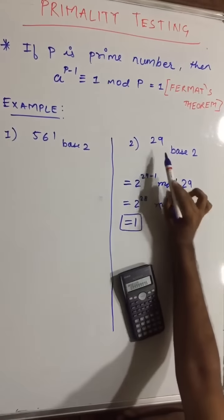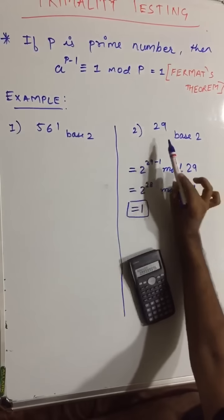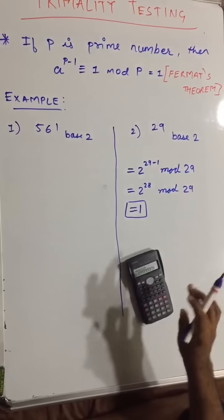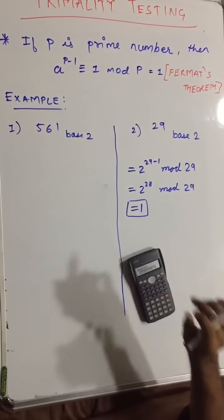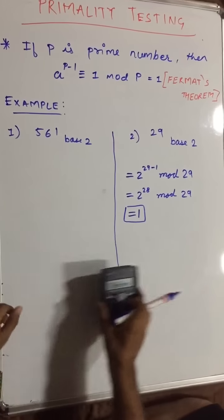So we can say that 29 is a prime number using primality testing, and we can directly also see that 29 is a prime number. But what if a larger number is given to us? So now let us move to this example number one.